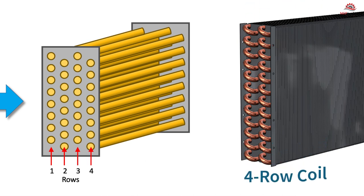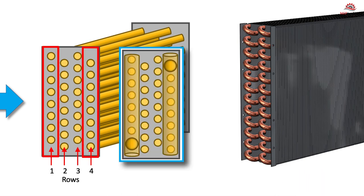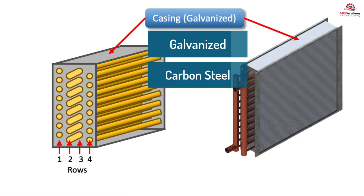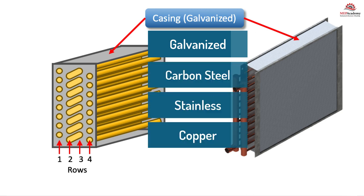If looking at the header, there would be one row for each header, which isn't visible when looking directly at the end. The coil will be housed in the casing, often constructed of galvanized sheet metal. Coil casing material can be galvanized steel, carbon steel, stainless steel, copper, or aluminum.